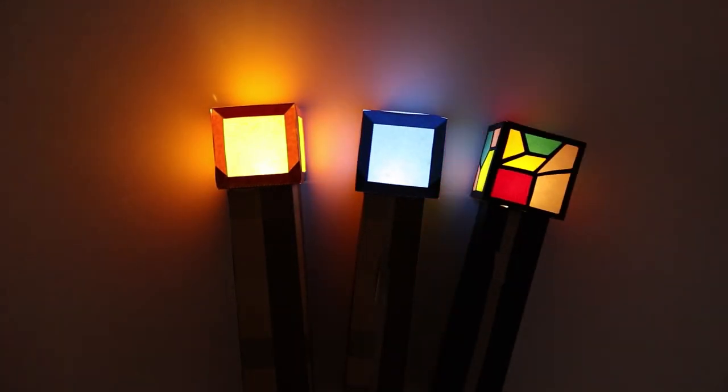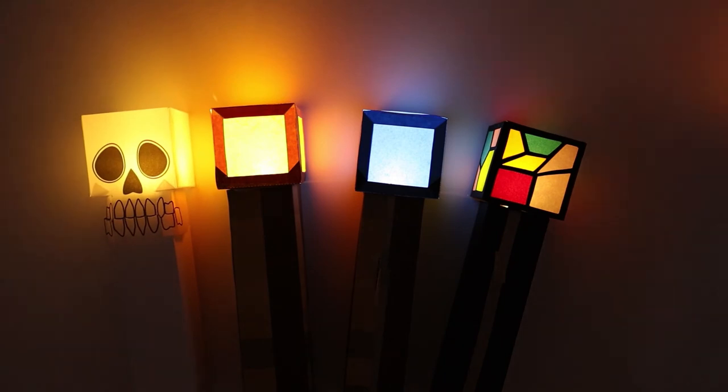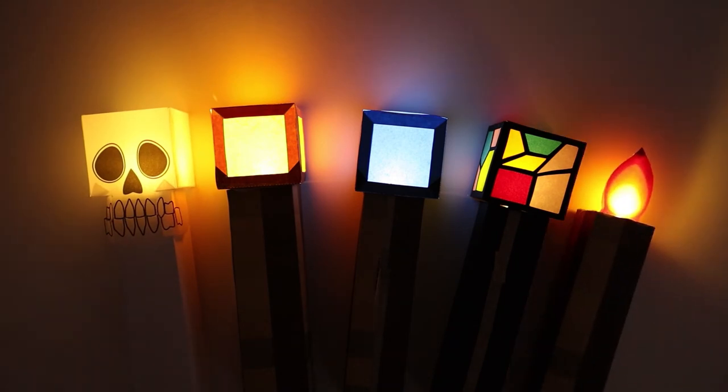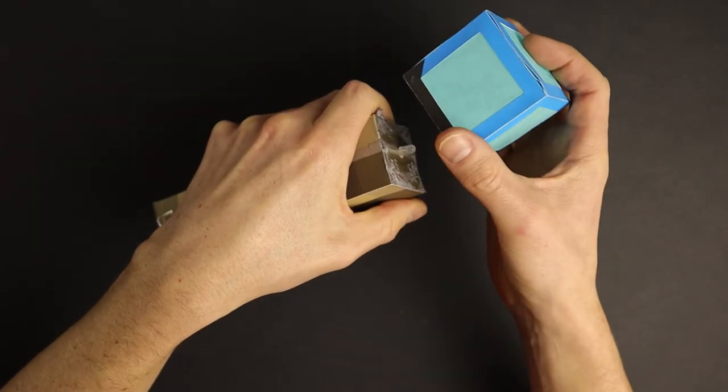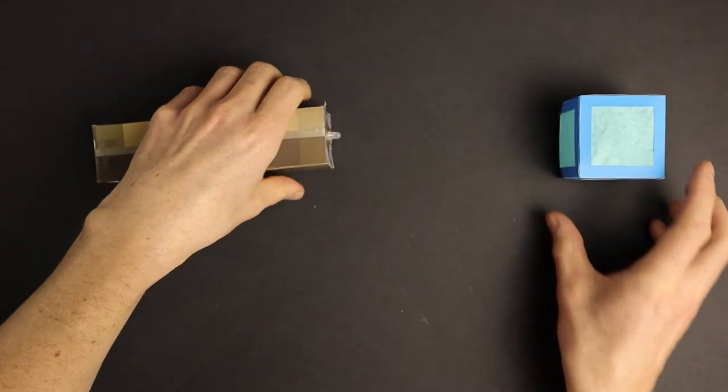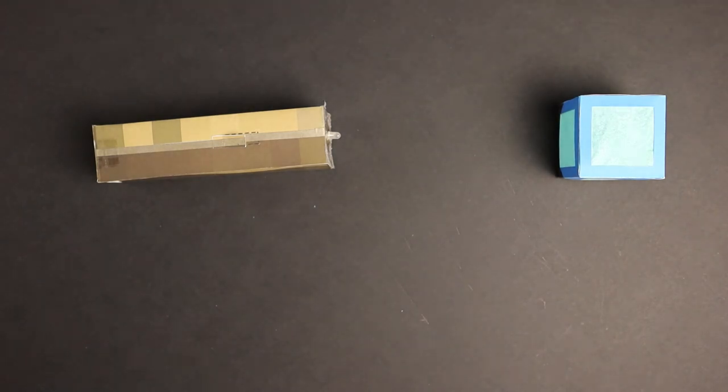Here you can see again all different designs. The circuit is exactly the same. You can use every light body on every handle template. Don't use too much glue for the light body. That way you can exchange it with another design or even use another component instead of the LED, like this little buzzer.